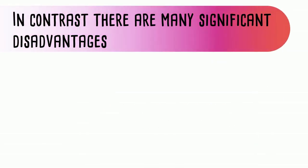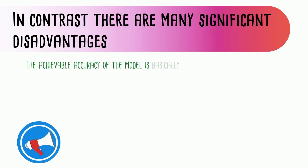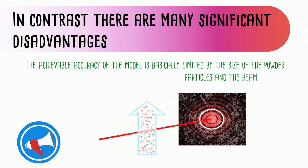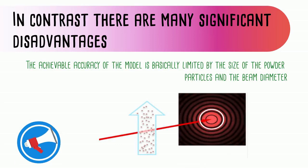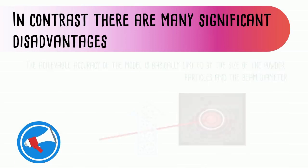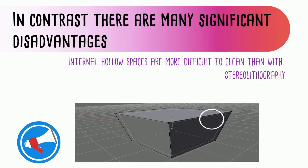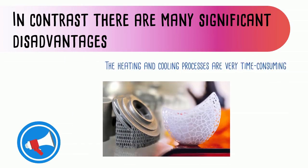In contrast, there are significant disadvantages. The achievable accuracy of the model is basically limited by the size of the powder particles and the beam diameter. Internal hollow spaces are more difficult to clean than with stereo lithography, and the heating and cooling processes are very time consuming.